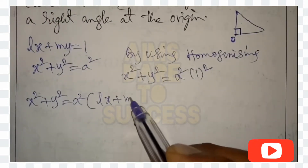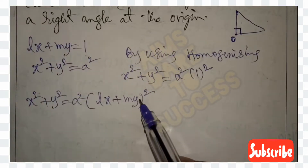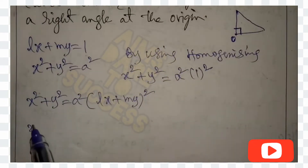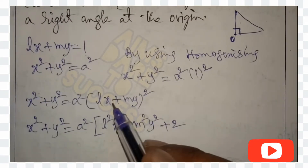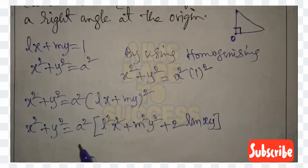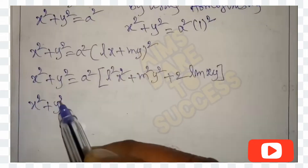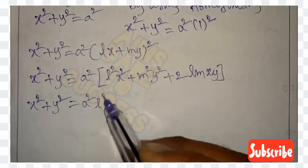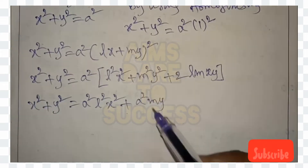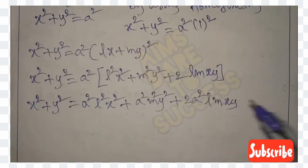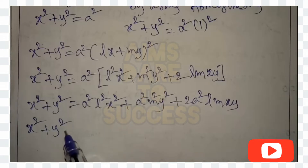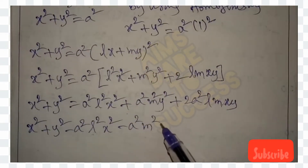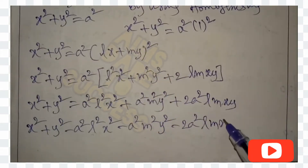Expanding (lx + my)² using the (a + b)² formula: x² + y² = a²(l²x² + m²y² + 2lmxy). Multiplying a² inside, we get x² + y² = a²l²x² + a²m²y² + 2a²lmxy. Moving all right-side values to the left side: x² + y² - a²l²x² - a²m²y² - 2a²lmxy = 0.